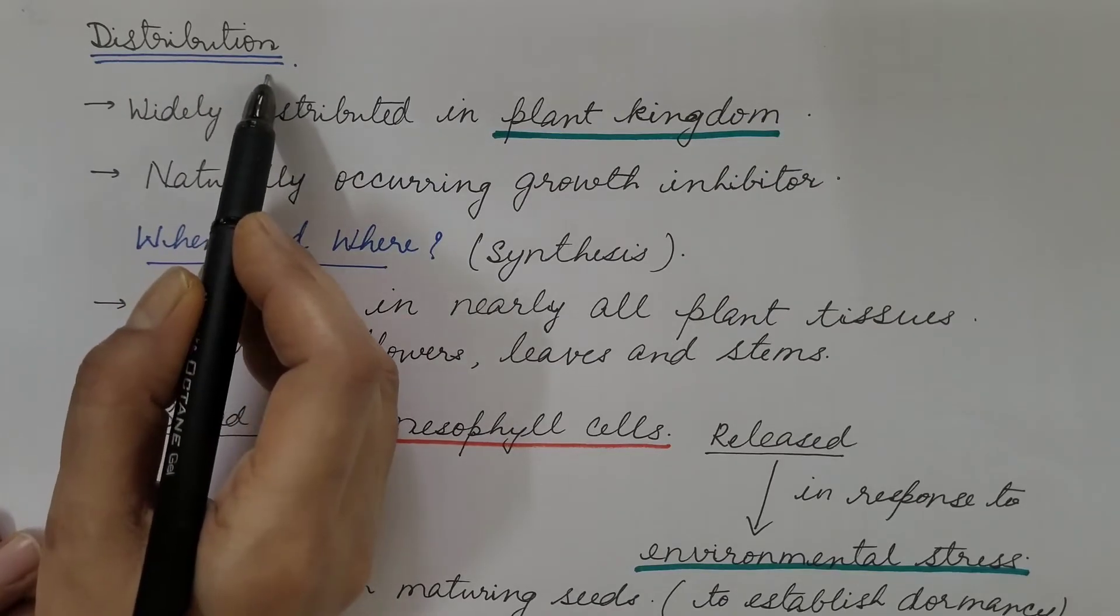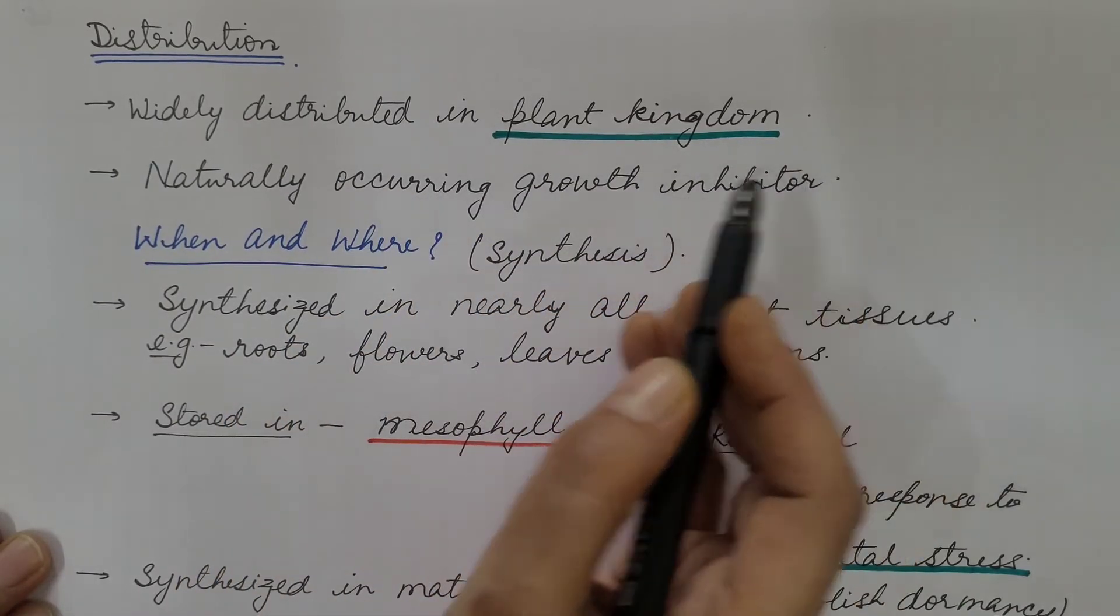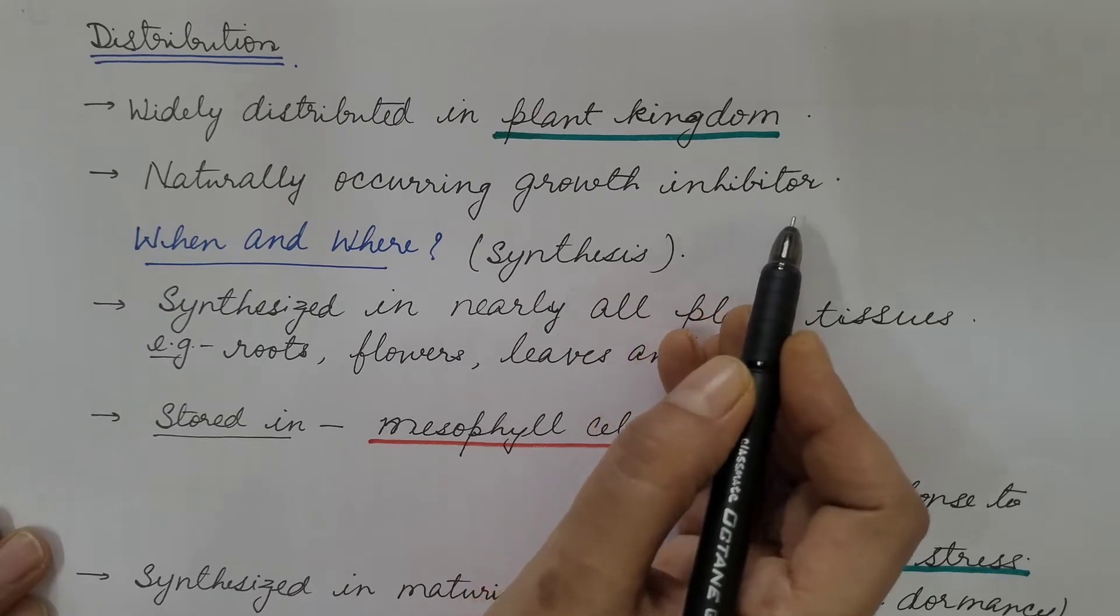Distribution of abscisic acid: It is widely distributed in the plant kingdom. It is a naturally occurring growth inhibitor, that is, it occurs endogenously.